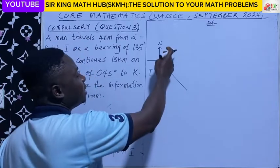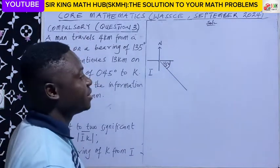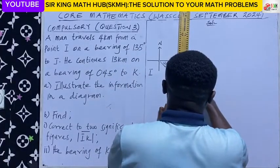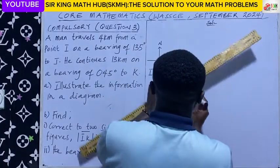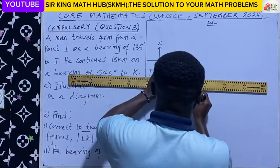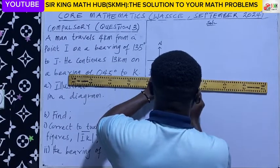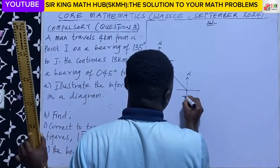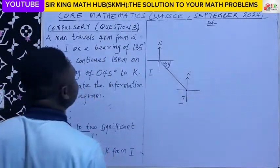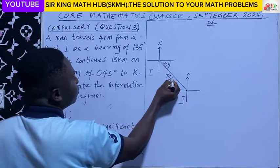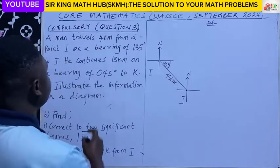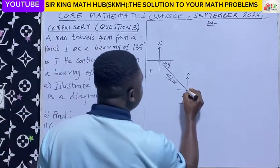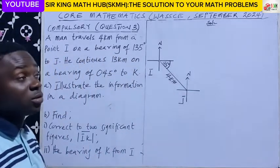So that is 90 degrees plus 45, making 135 degrees. So from point I, we move to point J, and he covered a distance of 4km. So we have represented the first statement, and that is the man's current location.